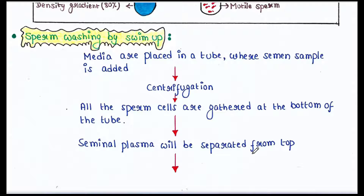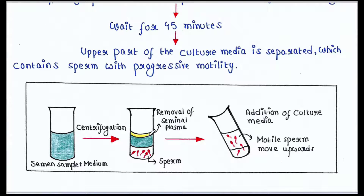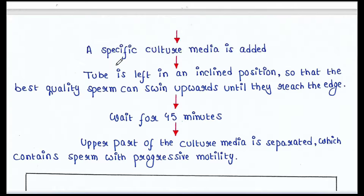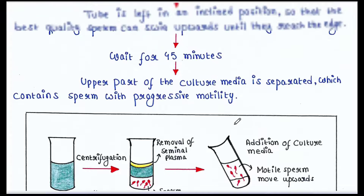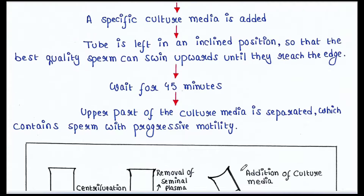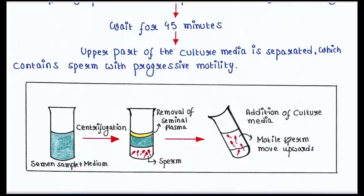After centrifugation, seminal plasma is separated from the top and removed. A specific culture media is then added on top of the sperm pellet at the bottom, and the tube is left in an inclined position so that the best quality sperm can swim upwards until they reach the top. We wait approximately 45 minutes.